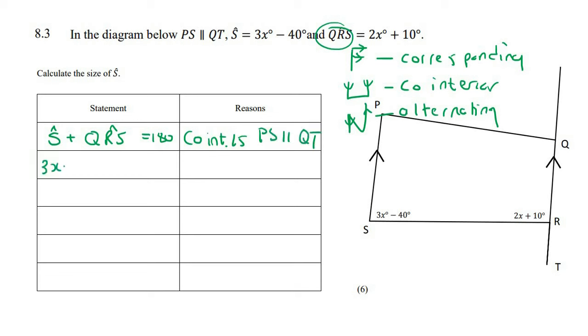And so you could say that 3x minus 40 plus 2x plus 10 equals 180. Now you're just going to solve for x. So you could say 5x, because that's what 3x plus 2x is. Then you're going to take the numbers to the other side, so it'll become 180 plus 40 minus 10. So that's going to be 5x equals 210 degrees. And then if you divide both sides by 5, we'd find out that x will be 42.